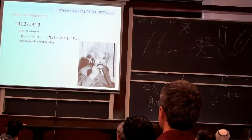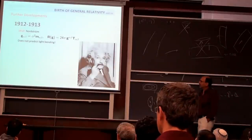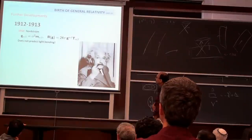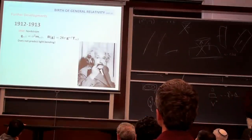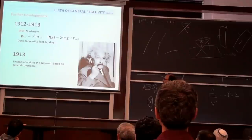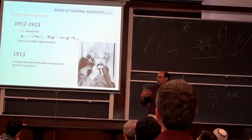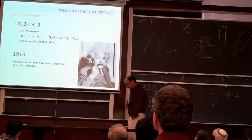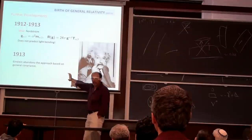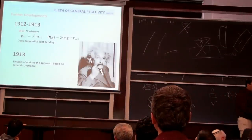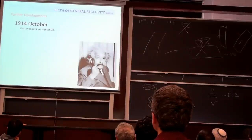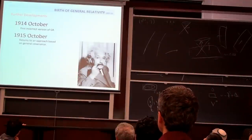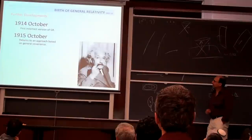In 1912–1913, many people got excited about the geometrization of gravity. The equivalence principle led Einstein to the notion of general covariance — you have to use the language of differential geometry, tensors, and covariant derivatives. However, he thinks he finds an issue with that approach, but he is wrong. He writes an incorrect version in 1914 which was not generally covariant. He realizes his mistake and comes back in 1915, returns to general covariance, and writes down the first form of the field equations.